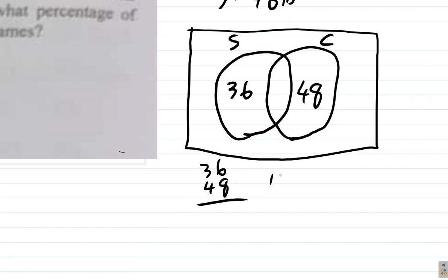8 and 6 is 14, bring down the 4, carry 1 over here. 4 and 3, 7 and 1, 8. So the 36 and the 48 add up to 84. So whatever is left over will come here. What is left over is 100 minus 84.